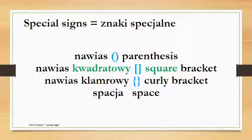Other special signs you might use are the parentheses, and in Polish language we call all of them nawias. Nawias can be just a regular one. Next would be a square bracket, which we call nawias kwadratowy — quadrat means square. And then nawias klamrowy is the curly bracket.